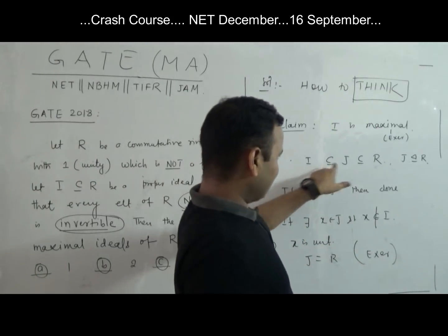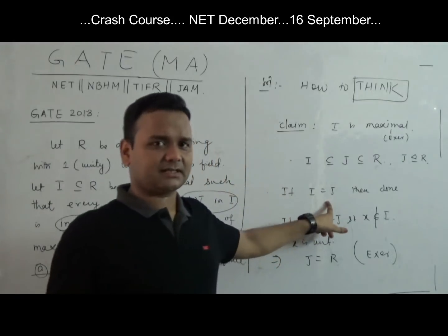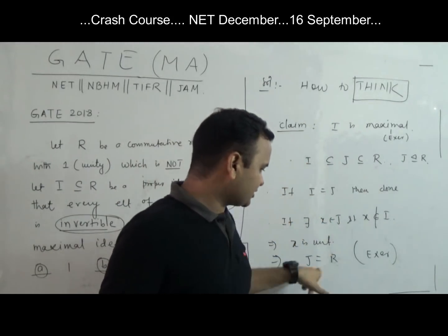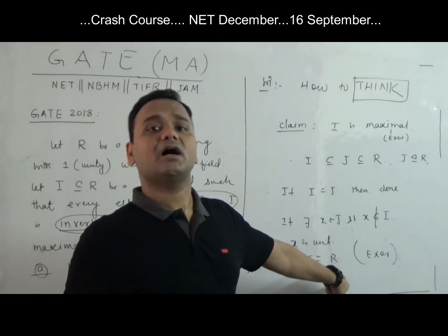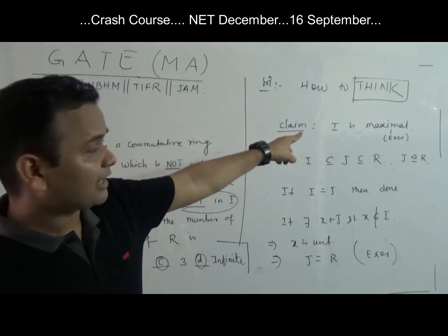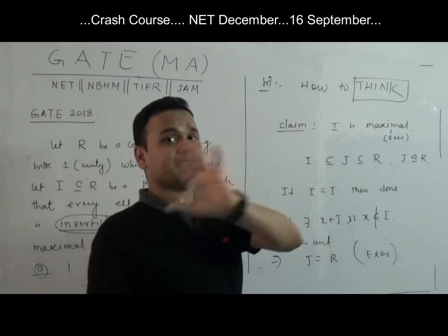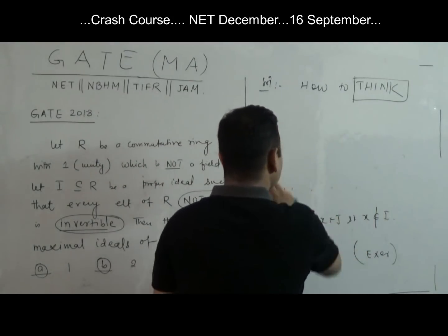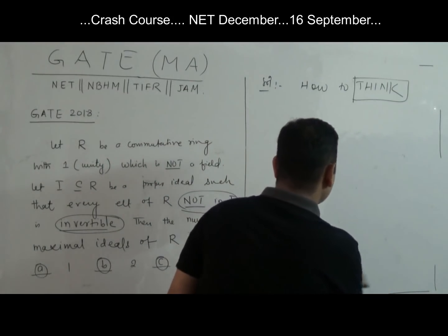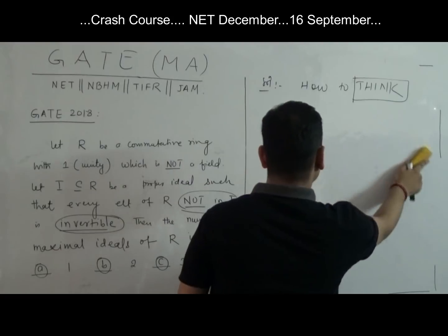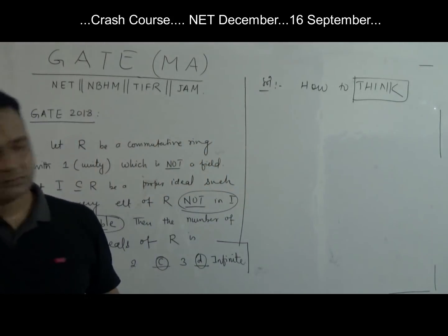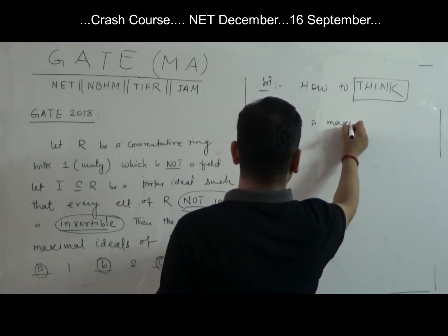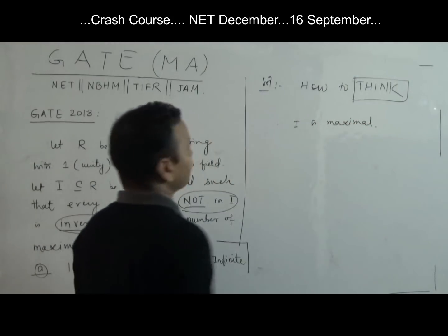So what have we proved? If I is not equal to J, then J equals R, by the given condition. This proves our claim. Hence, I is maximal. So the given ideal I is maximal — we have at least one maximal ideal.